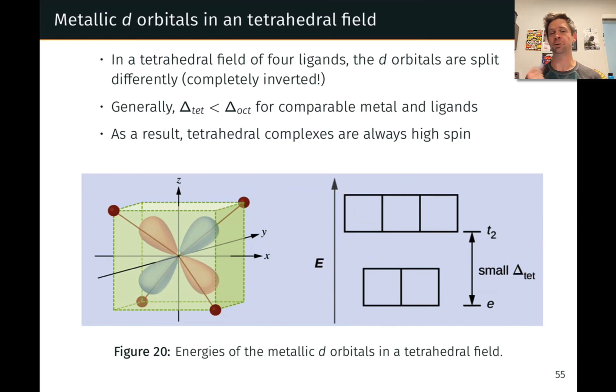And so Δtet, the crystal field splitting for a tetrahedral geometry, is generally smaller than Δoct for a comparable metal and ligands. Because of this reliably small splitting, tetrahedral complexes are always high spin.